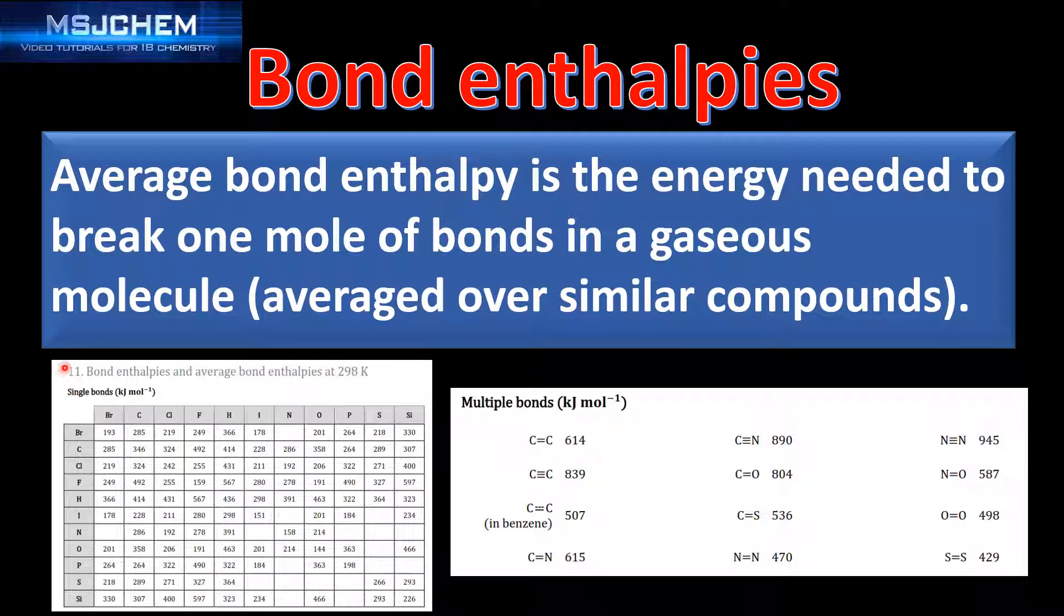In table 11 of the data booklet you'll find the average bond enthalpy values for single bonds and below table 11 you'll find the values for multiple bonds.